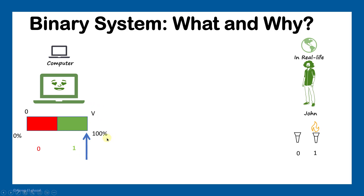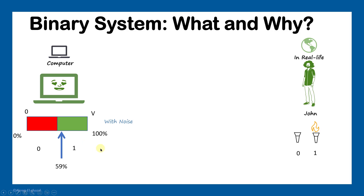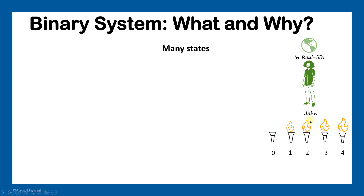We can define it so that if the voltage value is between 50% and 100% it represents one, and from 0% to less than 50% it represents zero. We have only two states. The good thing about this binary system is its noise tolerance. If noise reduces the value — say by 30%, so instead of 100% the value becomes 70% — we're still in the safe zone and the computer correctly considers it as one. Even if the noise is as large as 41%, reducing the value significantly, we still correctly consider it as one. So this system is not sensitive to noise.